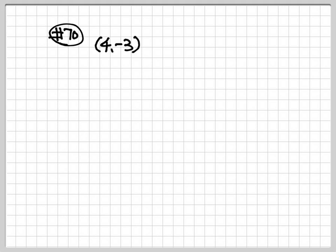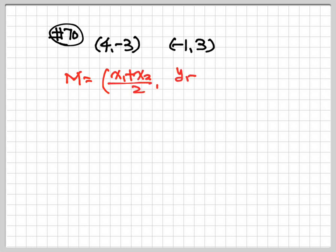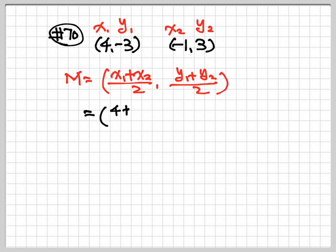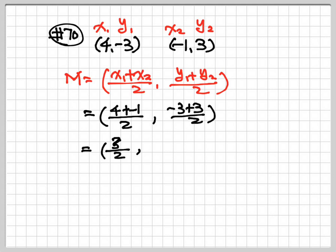Now let's look at number 70. We have (4, -3) and (-1, 3). Still going to find out the midpoint. The formula is x1 plus x2 over 2, y1 plus y2 over 2. So x1 is 4 plus negative 1 over 2; y1 is negative 3 plus y2 is 3 over 2. So here I have 3 over 2 and 0 over 2. Leave 3 over 2 as an improper fraction — that's okay. But when you have 0 over 2, you must write down 0. Do not leave as 0 over 2. So the midpoint is (3 over 2, 0).